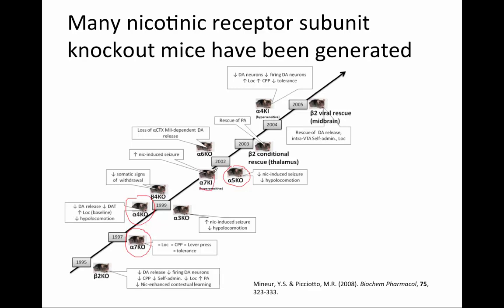You will also notice in this figure KI. KI means knock-in, and so these mice were generated by replacing the gene with a mutant gene that causes the subunit to be hypersensitive to agonists. These mutations are usually point mutations that alter the response of the receptor to agonists. The knock-in animals should show opposite behaviors or opposite physiological functions compared to the knockout animal.